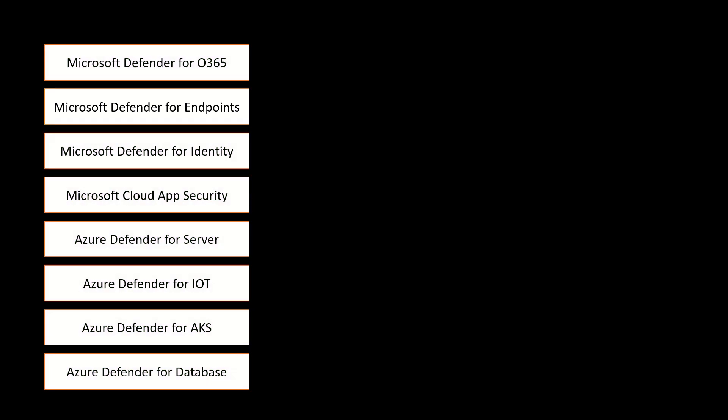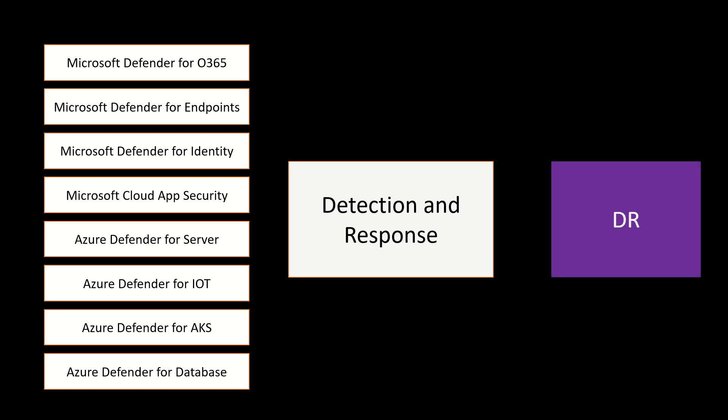Think about a scenario wherein you have different security solutions. The biggest challenge for an enterprise is to make sure that all security products are connected and the intelligence remains the same across different digital states. This comes out of the box with Microsoft security products because every security product is powered by the Microsoft Security Intelligence API. One solution can identify a threat and the same intelligence is shared with different products, bringing them all to the same level.